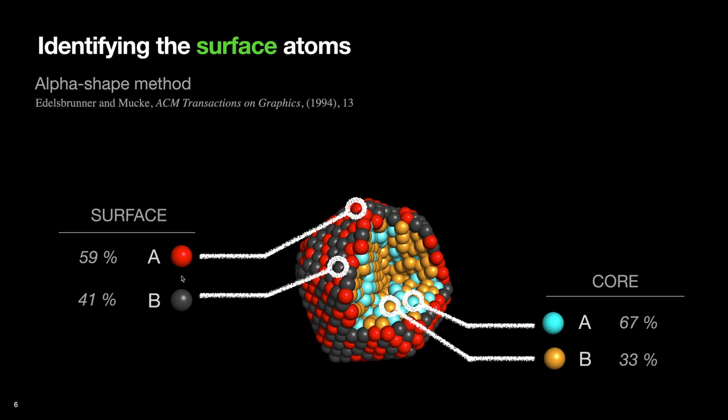That is, how many A atoms are on the surface, and likewise how many B atoms on the surface, and also for the core.